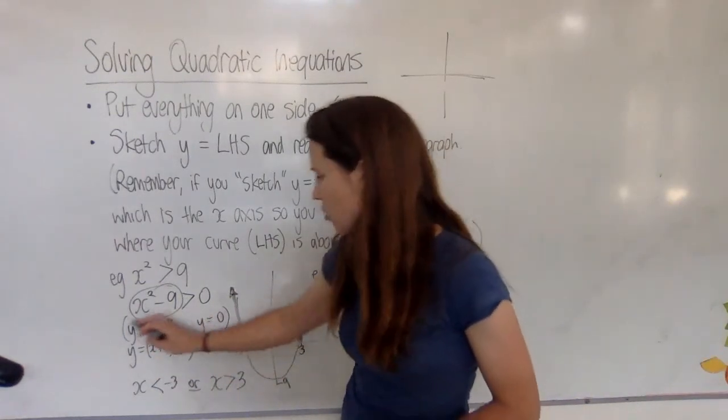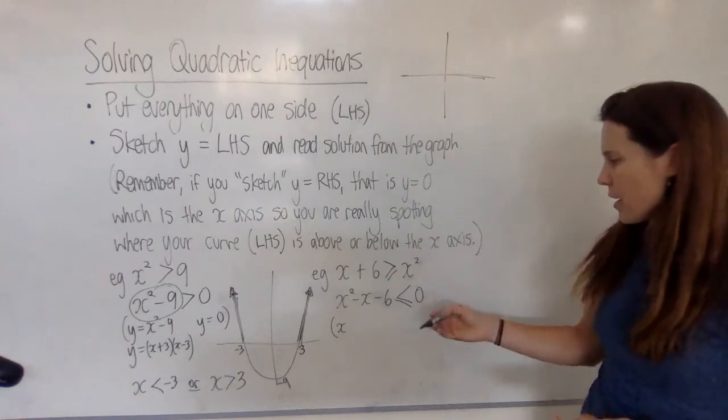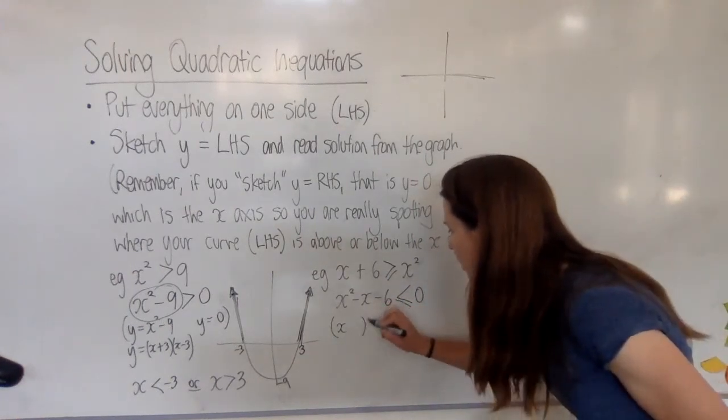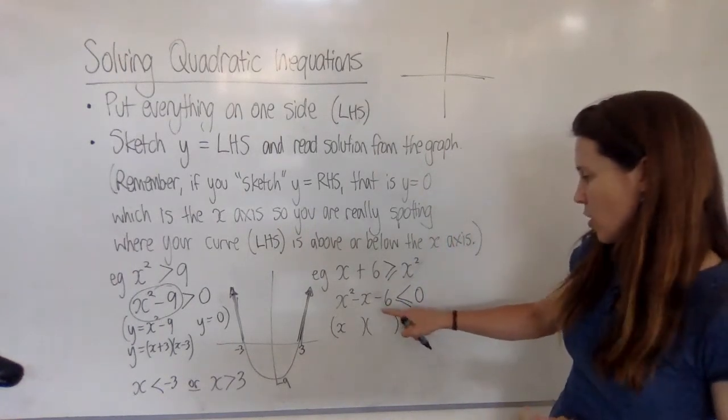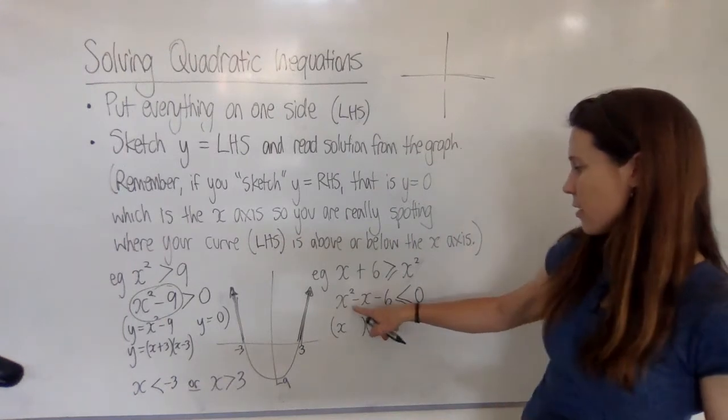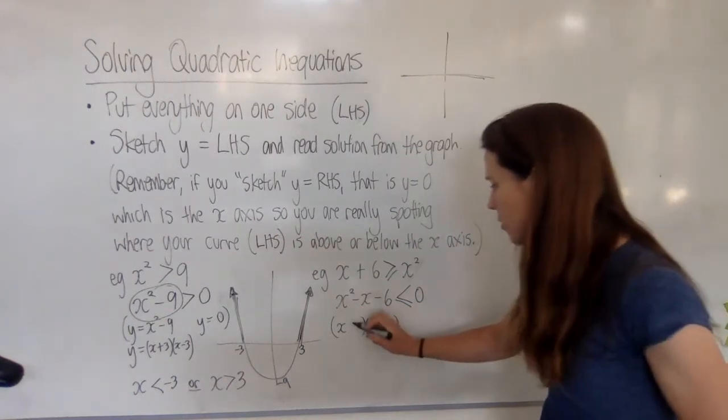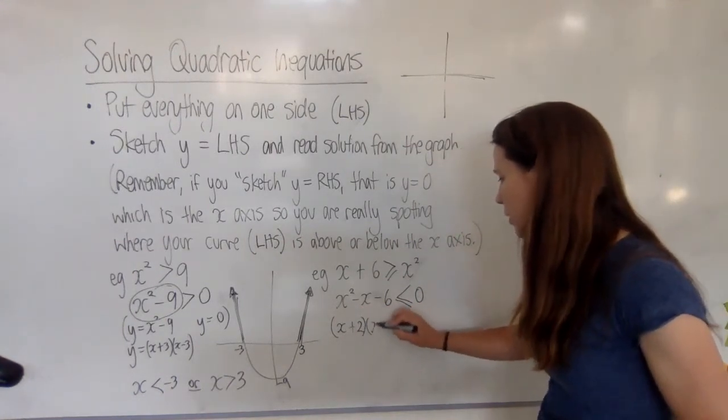This is something that you can think through in the beginning, but after a while you won't need to write it. You can actually just think, alright, I'll factorize this. Two numbers that multiply to minus 6 and add to minus 1, so I need plus 2 and minus 3.